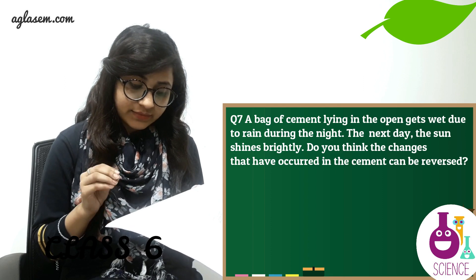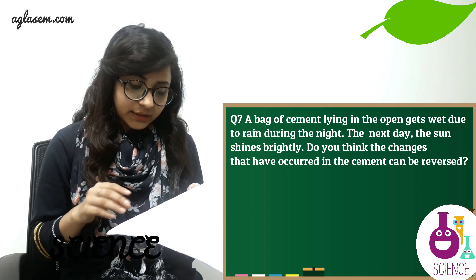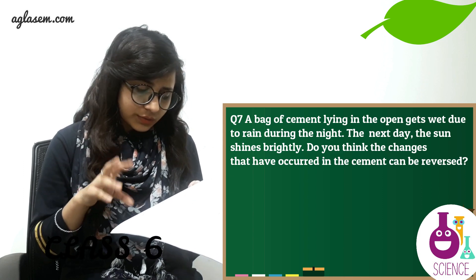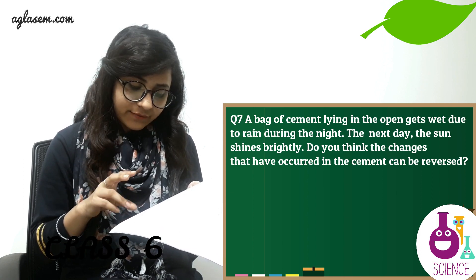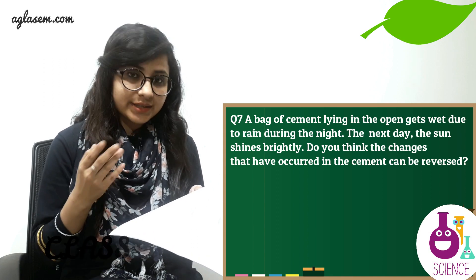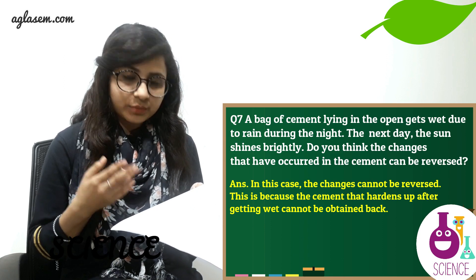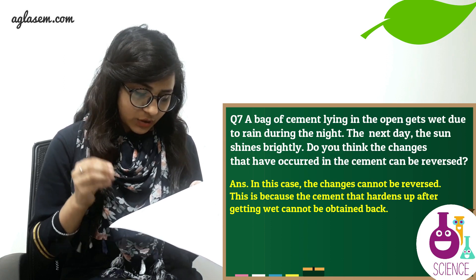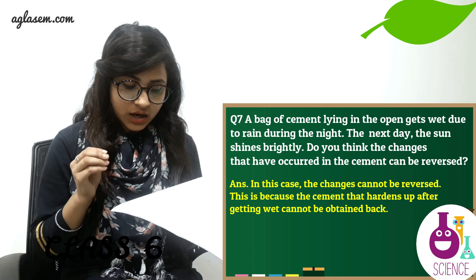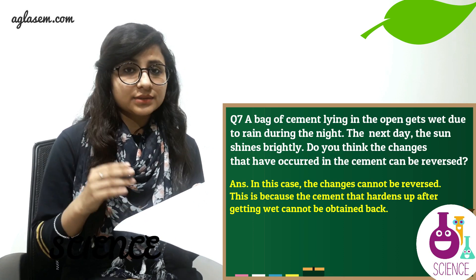Question number seven: A bag of cement lying in the open gets wet due to rain during the night. The next day the sun shines brightly. Do you think the changes that have occurred in the cement can be reversed? The answer is no — the changes cannot be reversed, because the cement that hardens after getting wet cannot be obtained back.